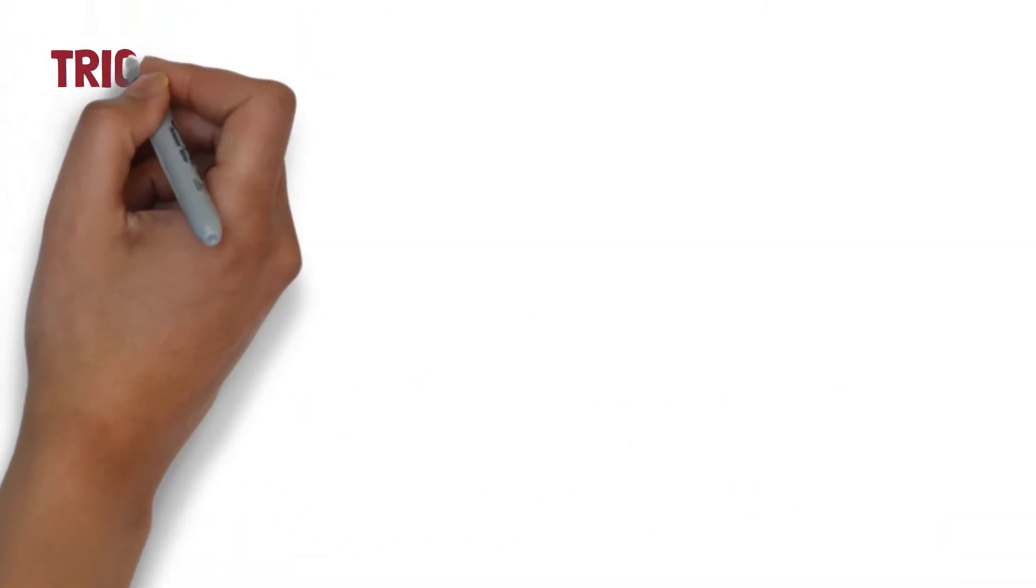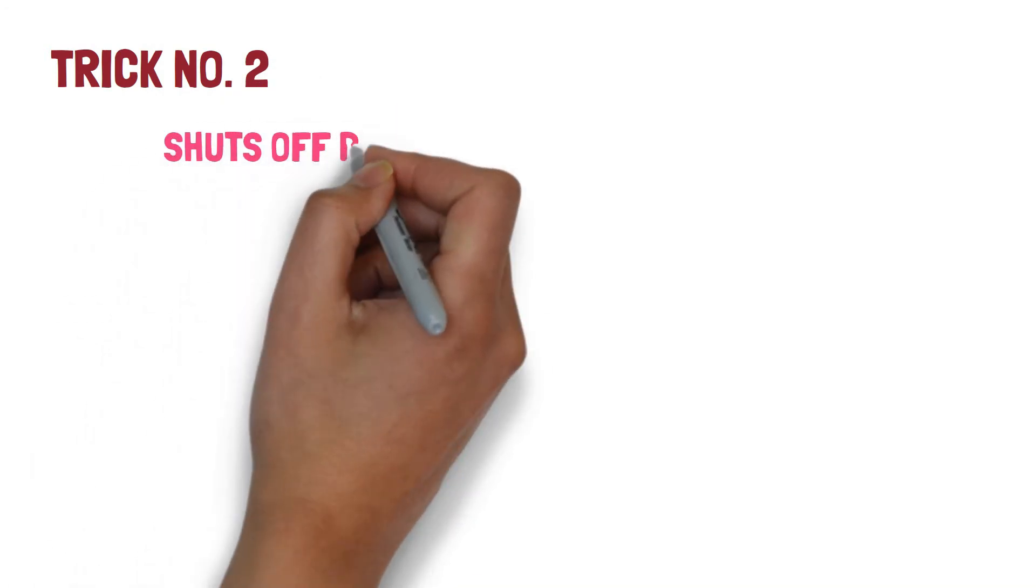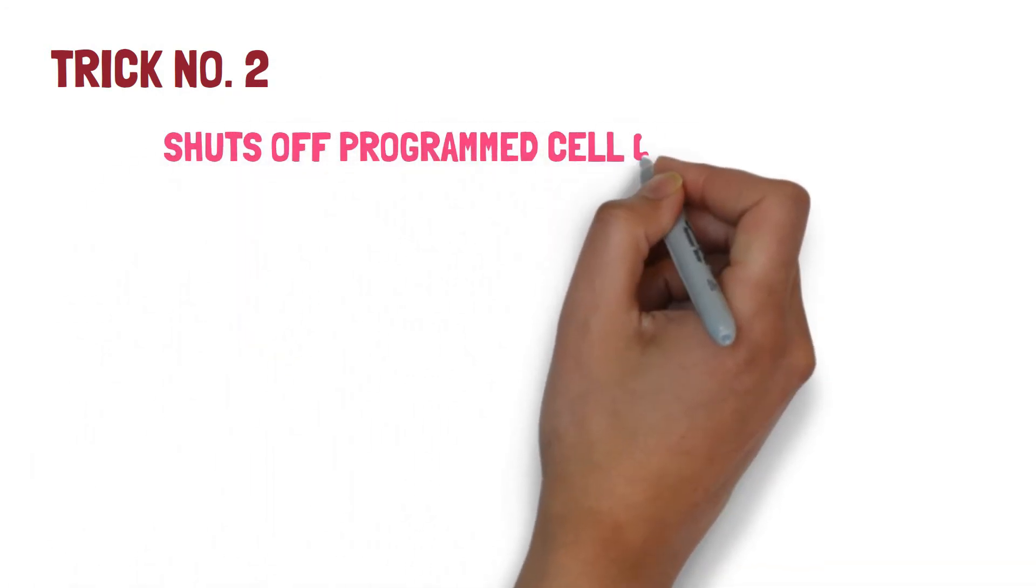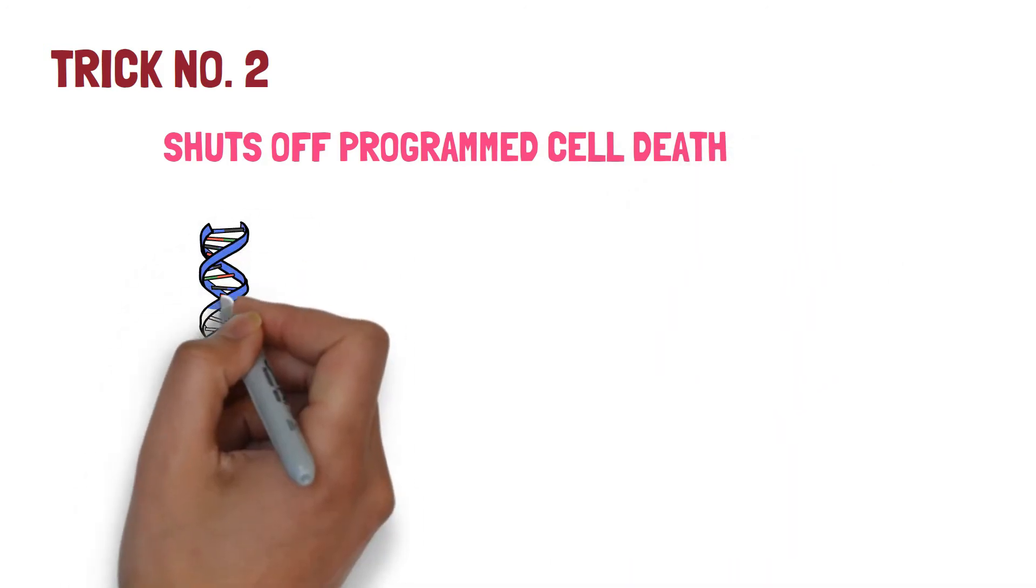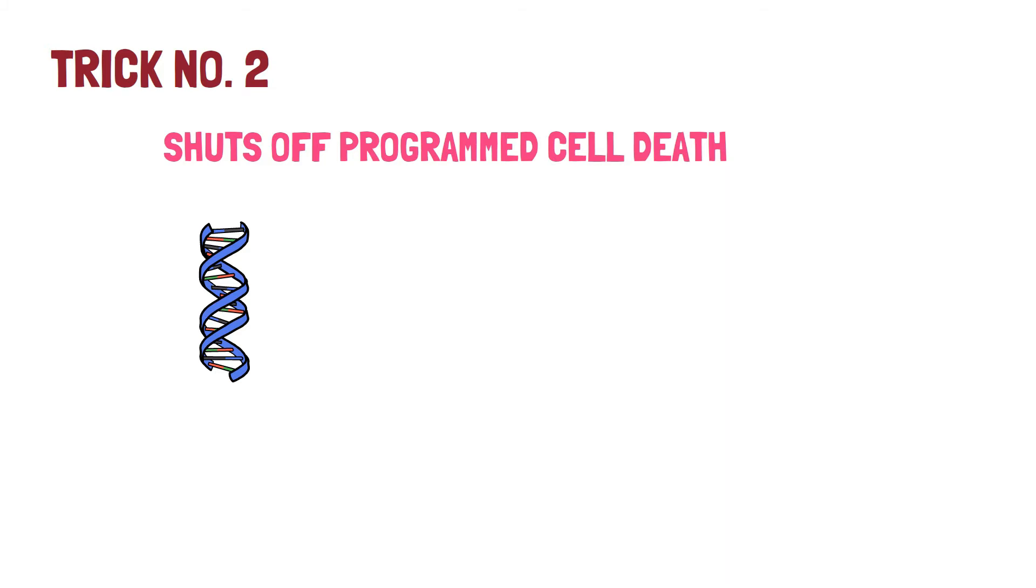Trick number two is the cancer cells shuts off programmed cell death or self-destruct mode. During each DNA replication there can be multiple errors in the newly formed DNA.